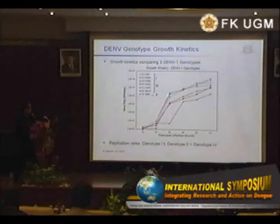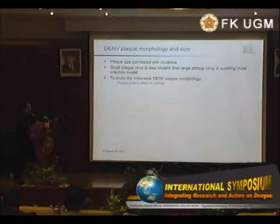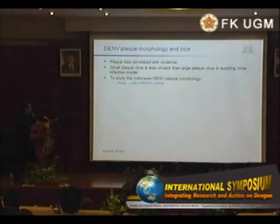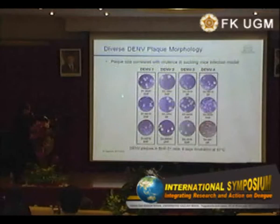For the genotype growth kinetics, we compared the rates of replication of the three genotypes of dengue 1 in Vero cells. The blue color is genotype 1, the red is genotype 4, and the single genotype is genotype 2. It is clear that genotype 1 replicates faster than genotype 2 and genotype 4.